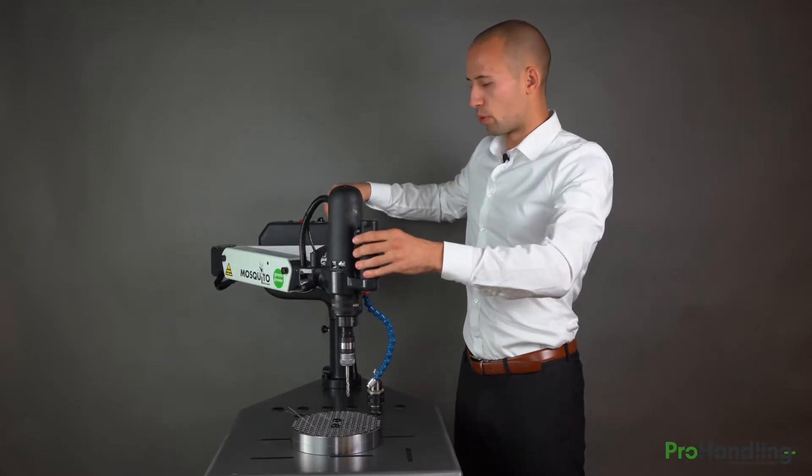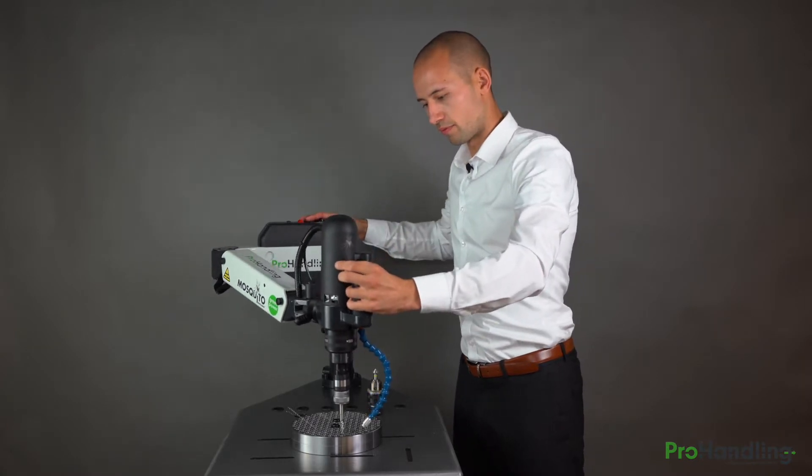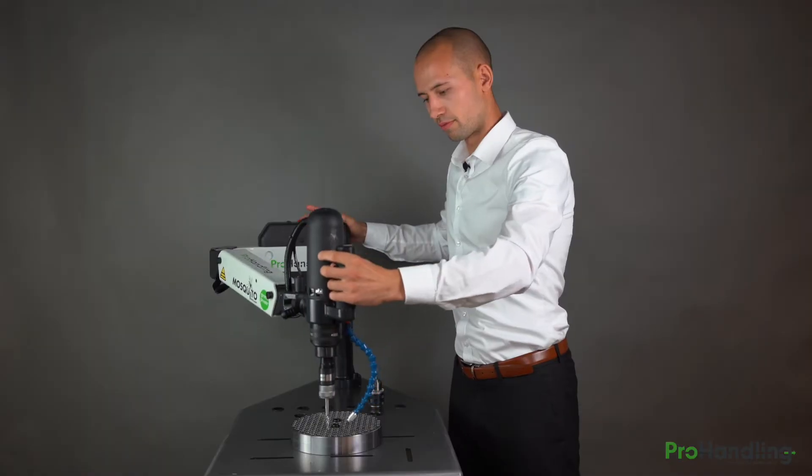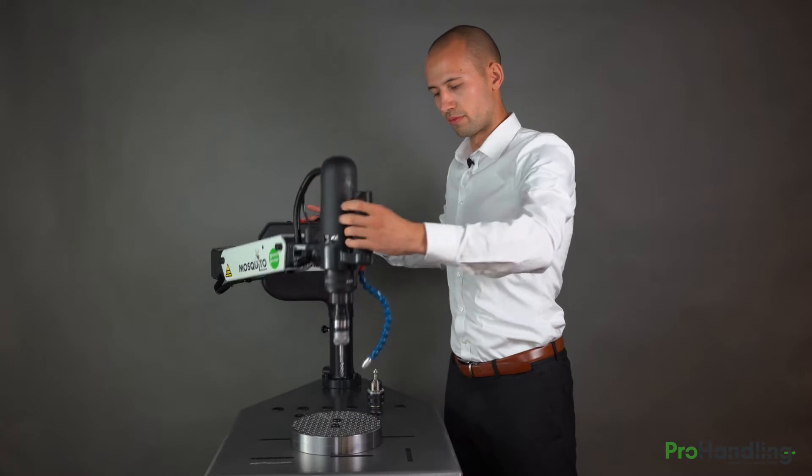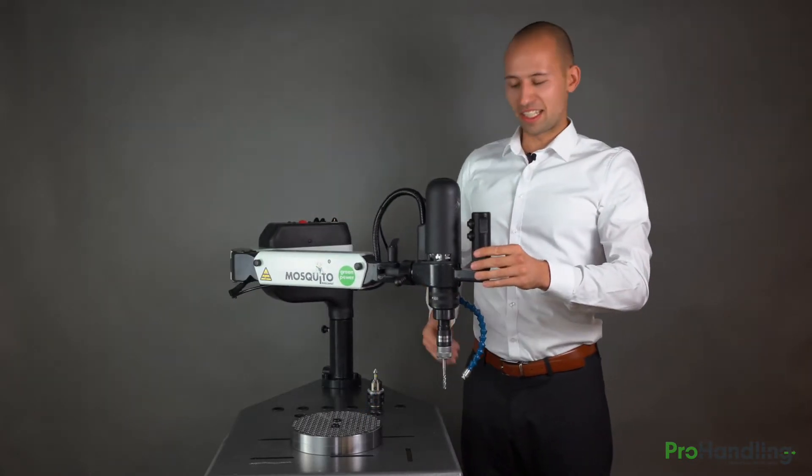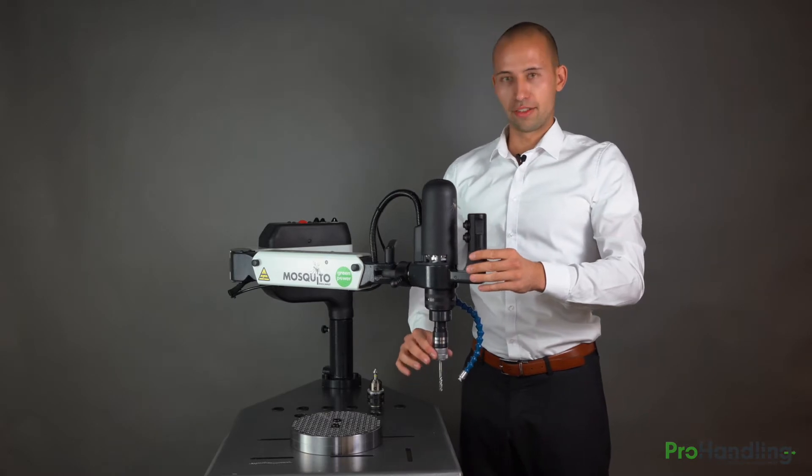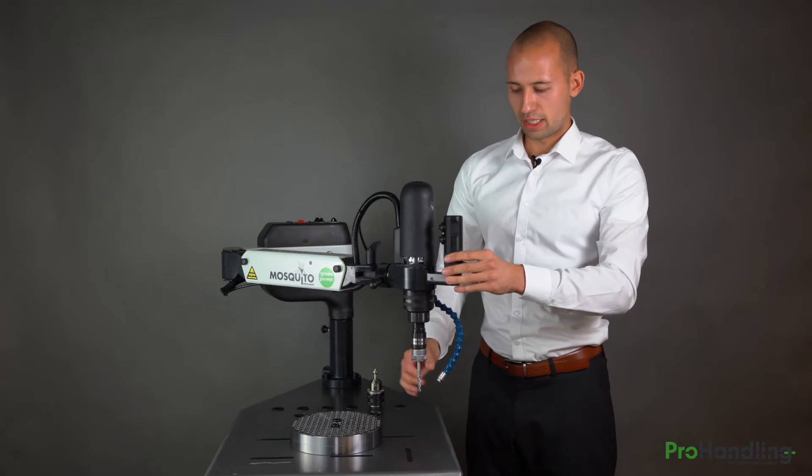Now the last point I want to show you how to tap with this machine. As you could see it goes really fast and really easy and at the end of the hole in the tool holder there is a clutch. So it saves your tool that it doesn't break.